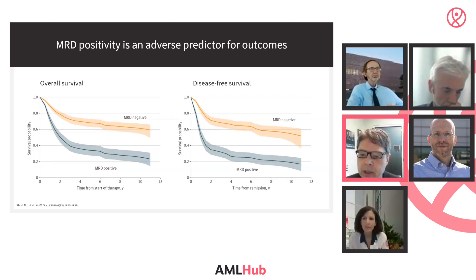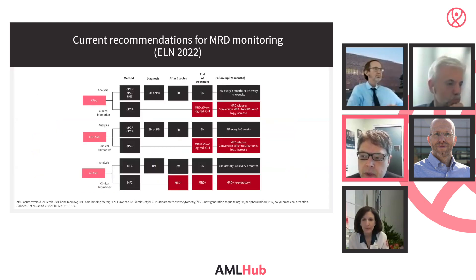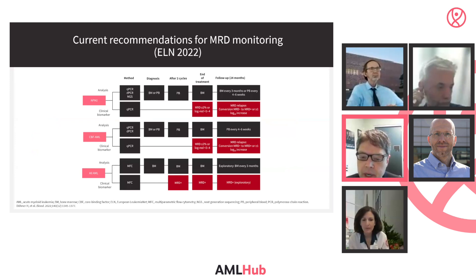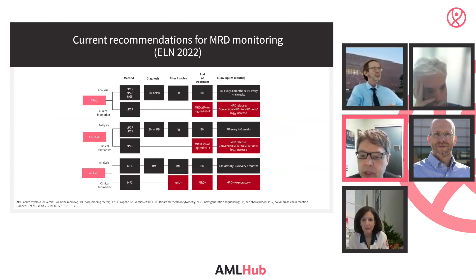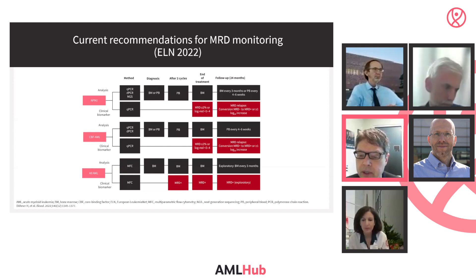MRD testing is clearly important and prognostic. These are the ELN 2022 guidelines for MRD monitoring in different AML categories, based primarily on the availability of high-sensitivity PCR testing assays for leukemic transcripts. This will likely be a dynamic field, changing if the technology improves and we can create higher-sensitivity assays for molecular testing at the genetic level.